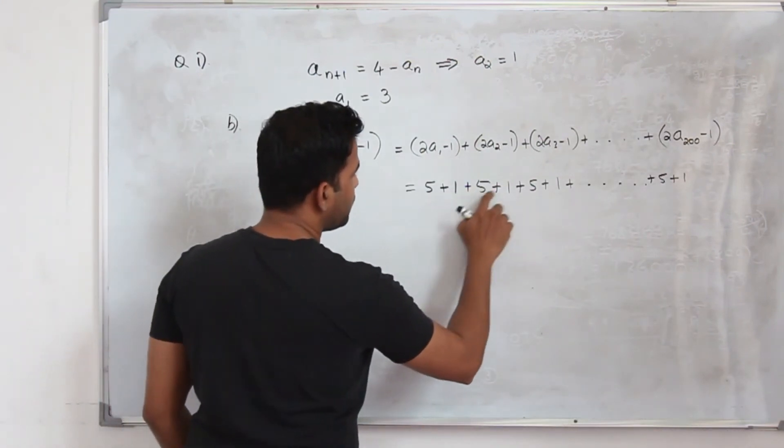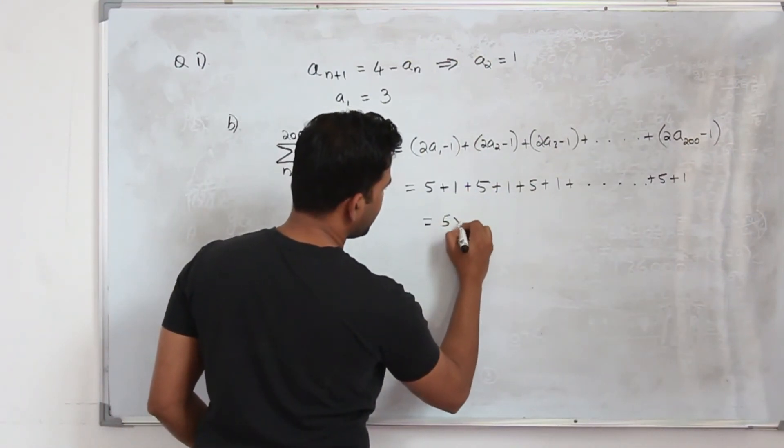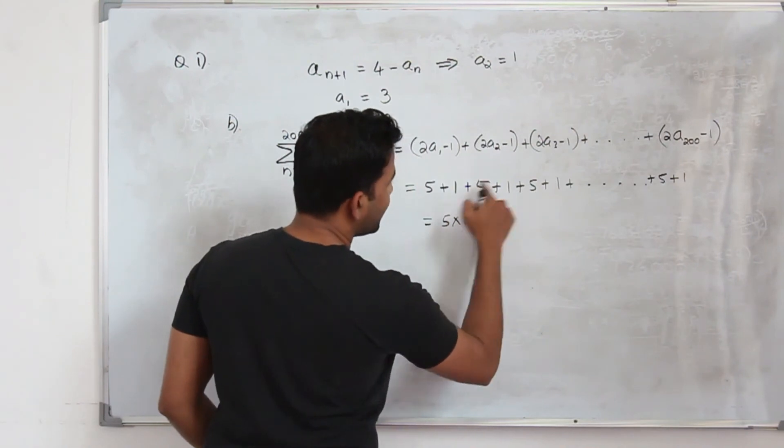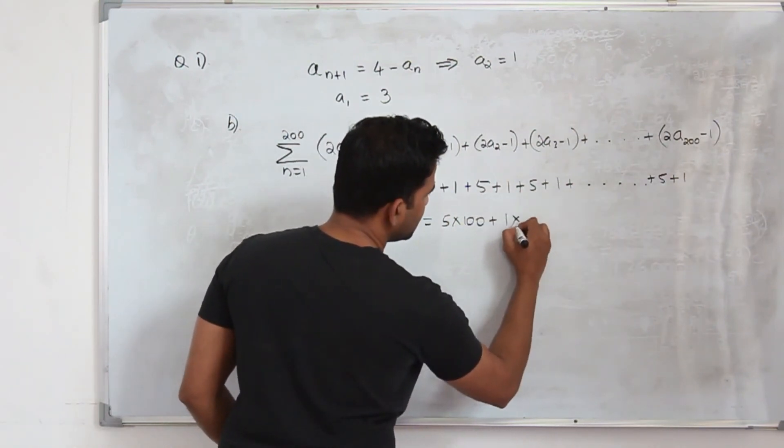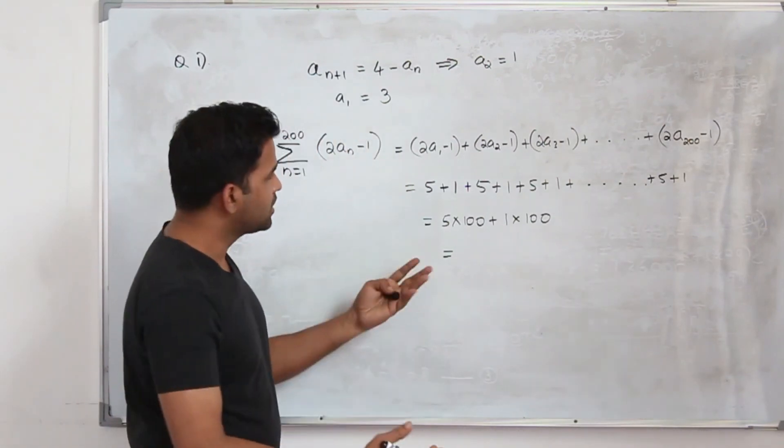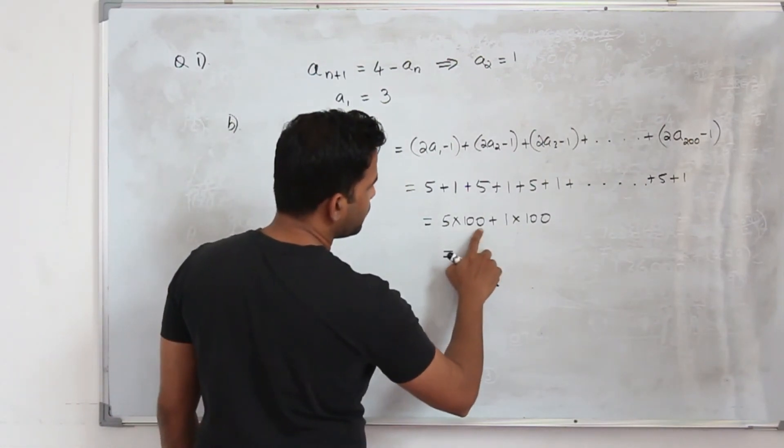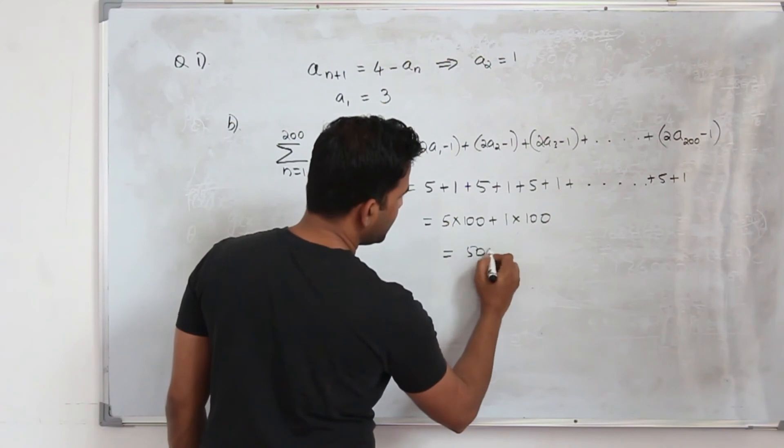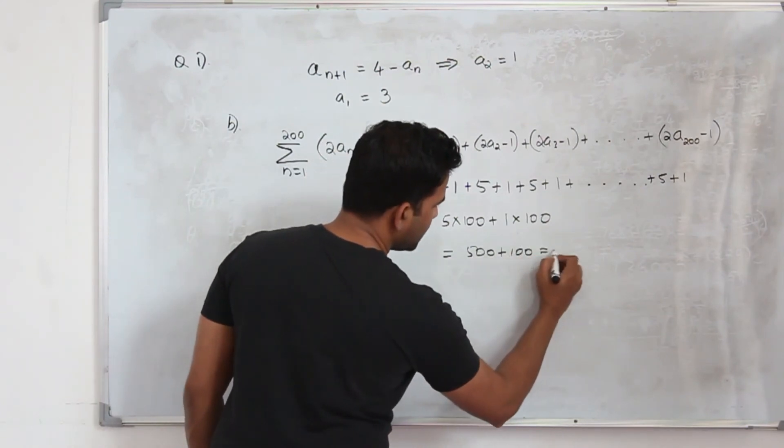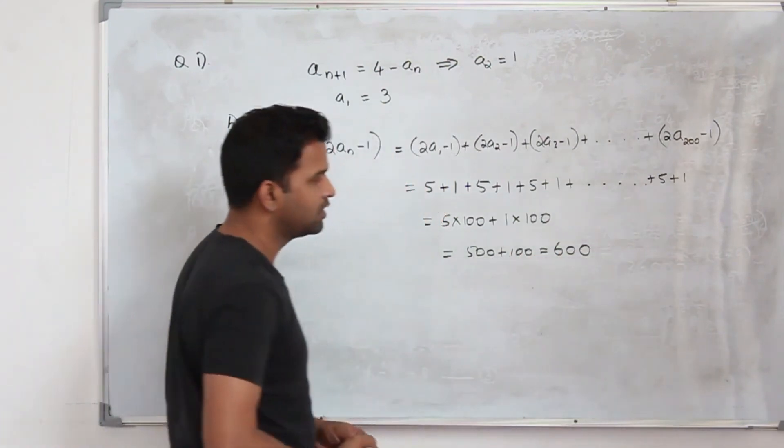So there are a total of 200 terms. That means you have 100 fives and 100 ones. So that's the summation. You can just calculate: 500 plus 100 is 600. That's it.